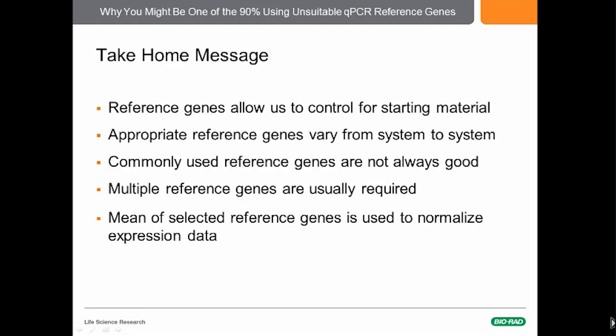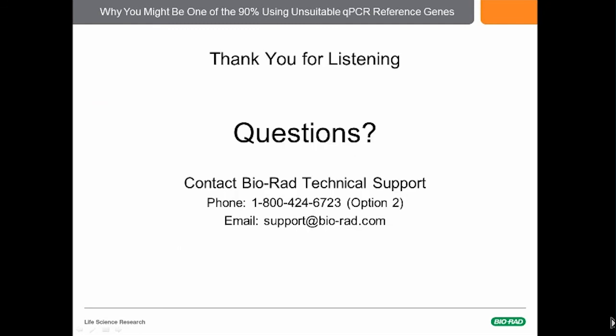So the take-home messages: reference genes allow us to control for the amount of starting material. Appropriate reference genes may vary from system to system. Commonly used reference genes are not always good — we saw that beta-actin didn't always turn out to be as good as one would hope. Multiple reference genes are usually required. And we're going to use the mean of the selected reference genes to normalize expression data. Thank you for listening.